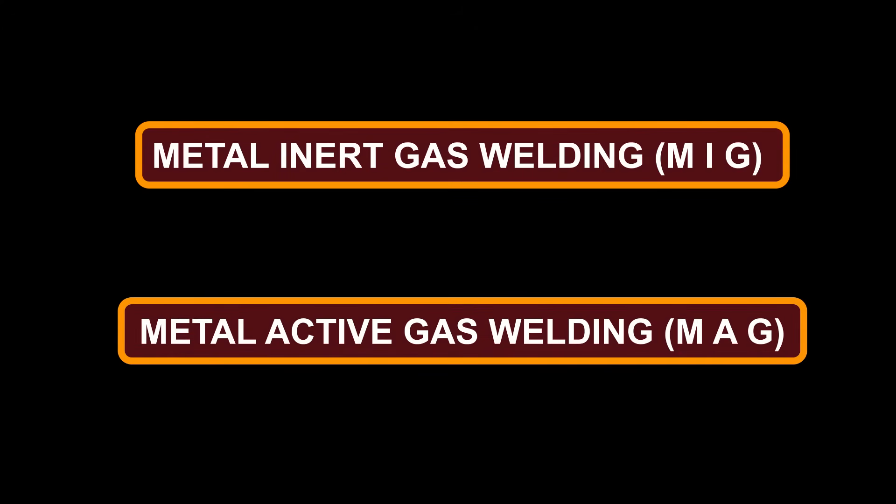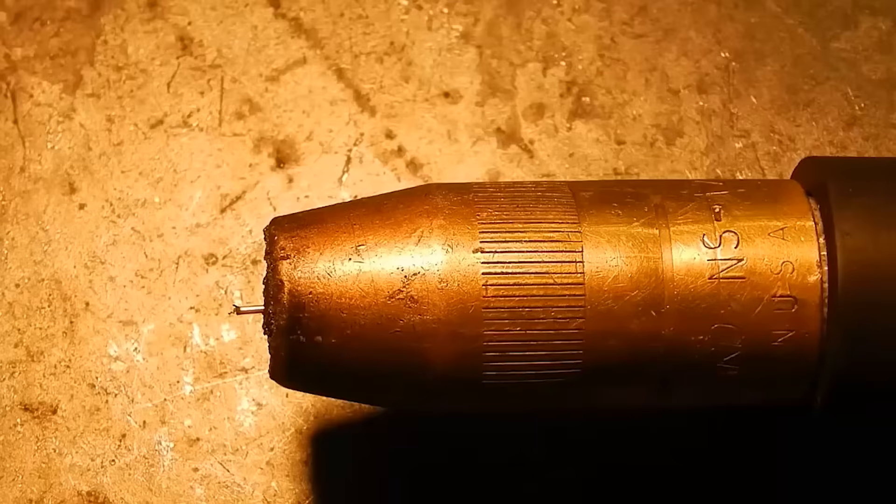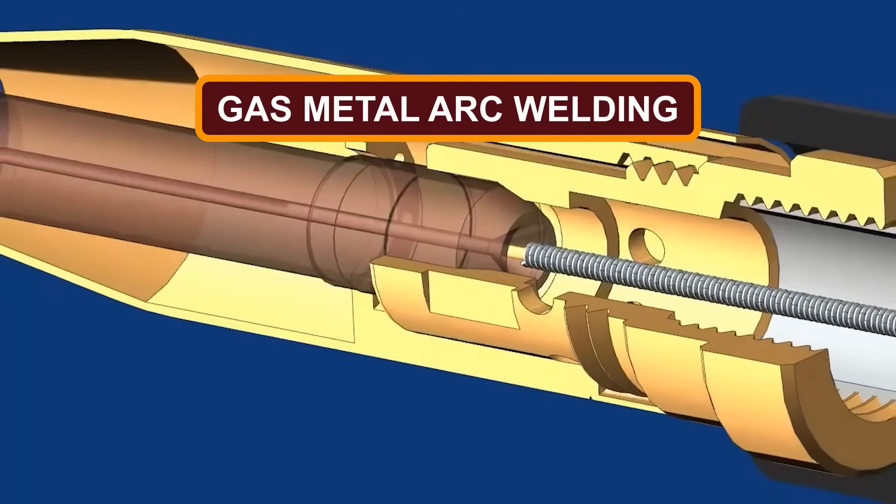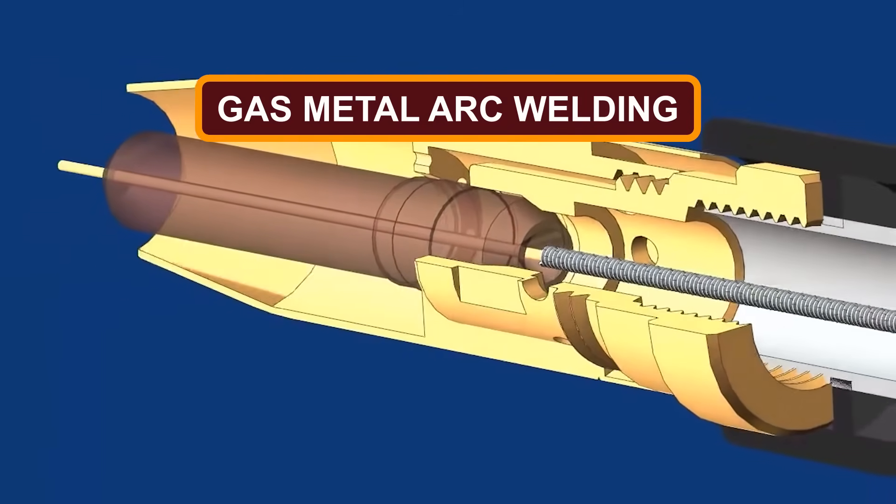Metal Inert Gas Welding (MIG) and Metal Active Gas Welding (MAG), also known as gas metal arc welding, use a shielding gas to protect the base metals from contamination.